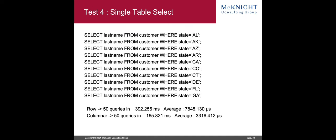Now let's move to the happy state — the selects, where you get the benefit. Running select last name from customer where state equals each of the 50 US states — 50 queries total — took 7,845 microseconds for row versus 3,316 microseconds for columnar. That's less than half. And in the columnar database, there's no indexing needed because the column values are already broken out.